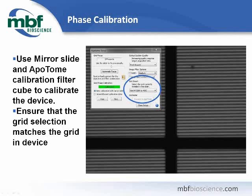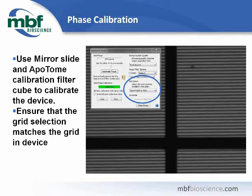Using the mirrored calibration slide that comes with your Apatome setup, first find the crosshairs and focus on them. This ensures that you are focused at the very top of the slide and ready to begin the calibration routine. When you have brought the grid lines into focus, you are ready to run the phase calibration. In this sample image you see a nice high-contrast grid pattern on the screen. Make sure you have selected the grid which is currently installed in your slider and click the Fast button on the lower left of the Apatome dialog.